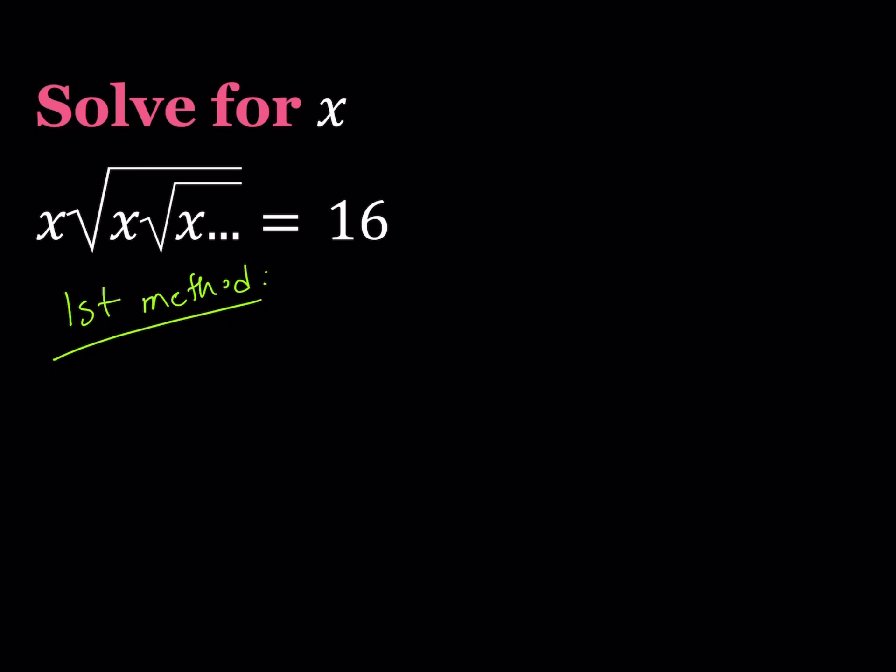My first method basically involves using some substitution. Obviously substitution is a very powerful method. Let's go ahead and take this radical piece here and let's call that something. I want to exclude the x because x doesn't really follow the pattern that we have here. So I want to call this radical part, you can call it y, you can call it a, doesn't really matter. Let's call it a.